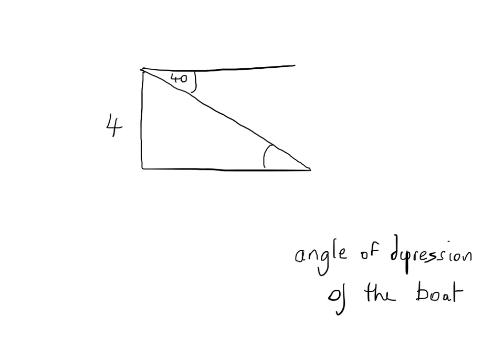In the three examples we've looked at, we always had at least two items of information within the triangle. In this particular problem, there's only one item of information inside the triangle, so it seems like we can't solve it. It looks like we need at least two items of information to solve problems using trigonometry. But in fact, we can solve this, and I'm going to explain that right now.